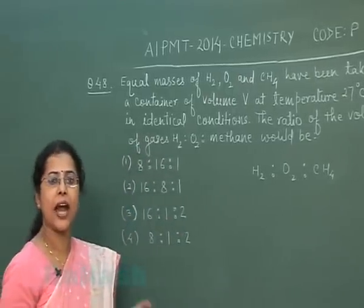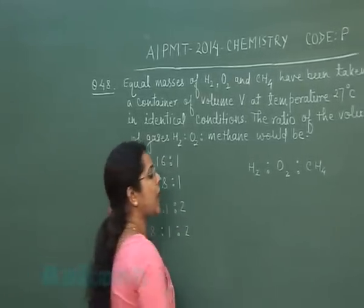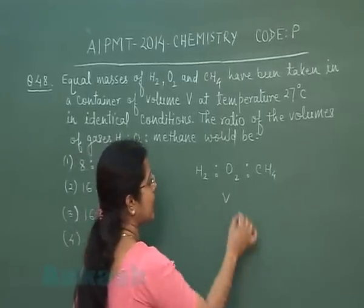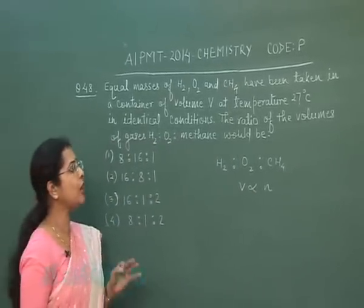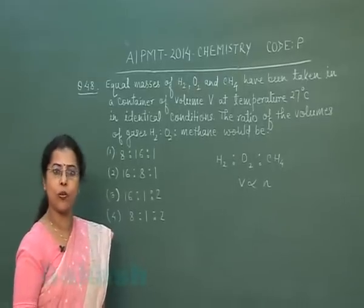Now, in this question we are taking three different gases—hydrogen, oxygen, and methane—but all three gases are taken at identical conditions. We know that volume of gas is directly proportional to their number of moles. Now we have to calculate the number of moles.